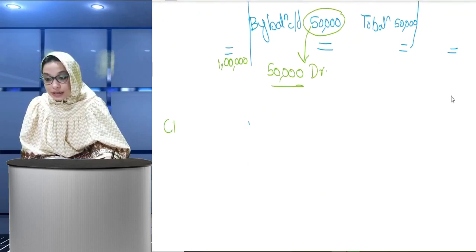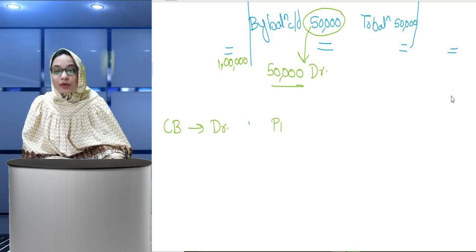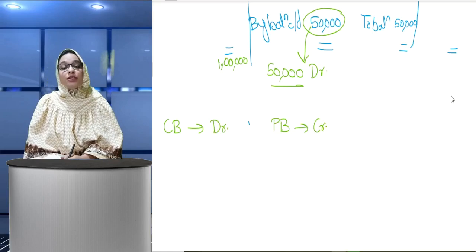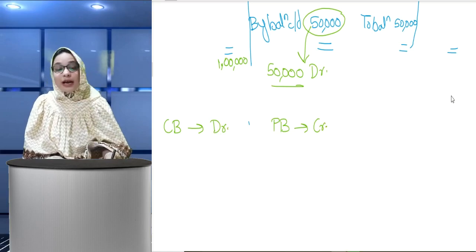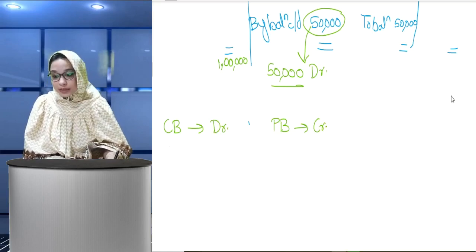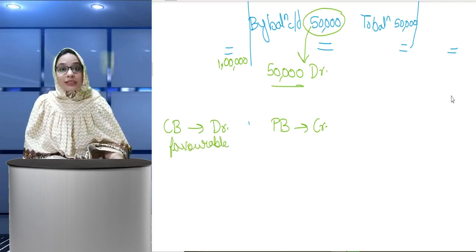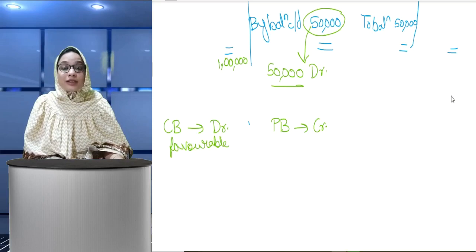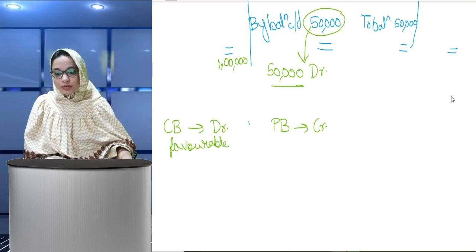So what we learned: when cash book has a debit balance, then pass book will generally have a credit balance. Both are favorable. Aapke bank account mein debit balance hona achhi baat hai; similarly pass book mein credit balance hona achhi baat hai — it shows that you have money in your bank account.